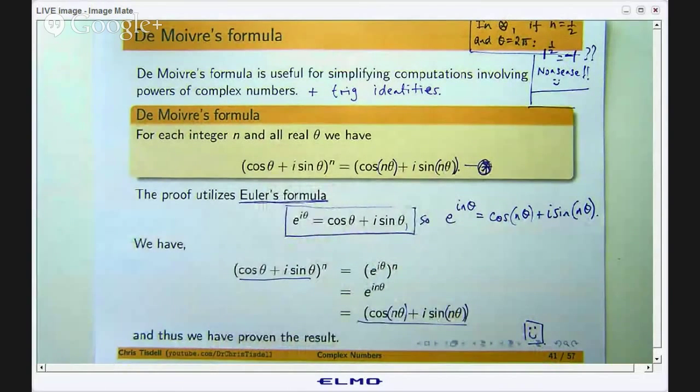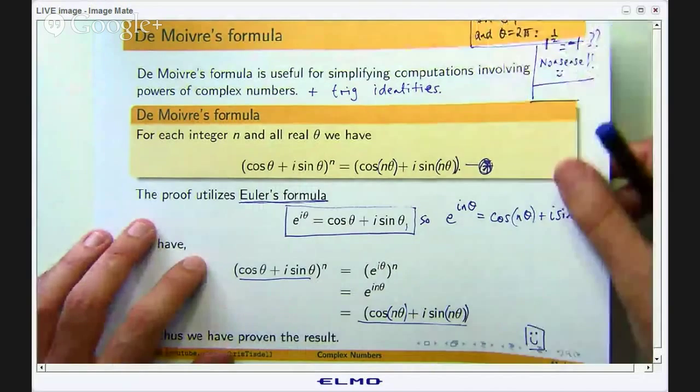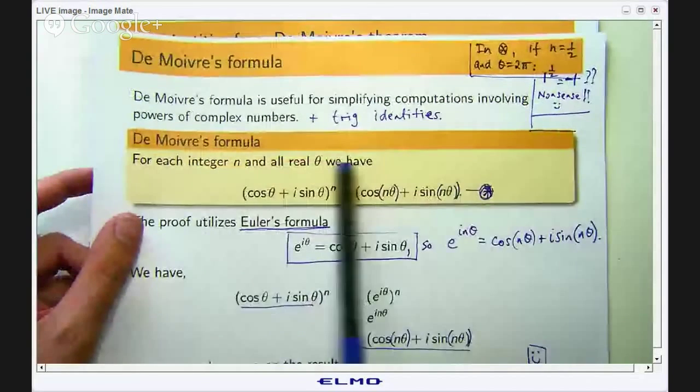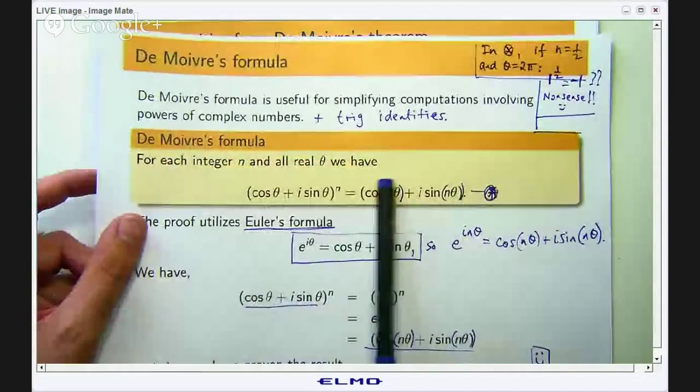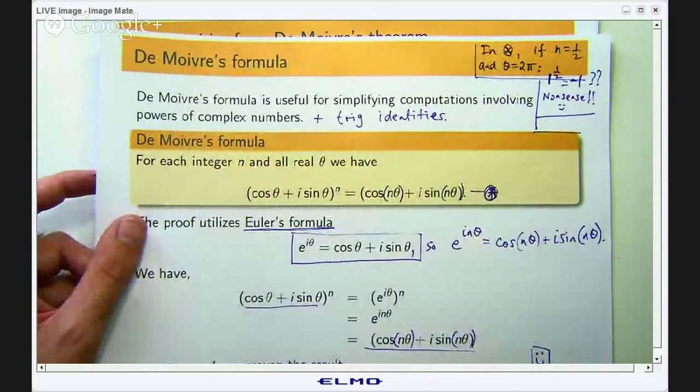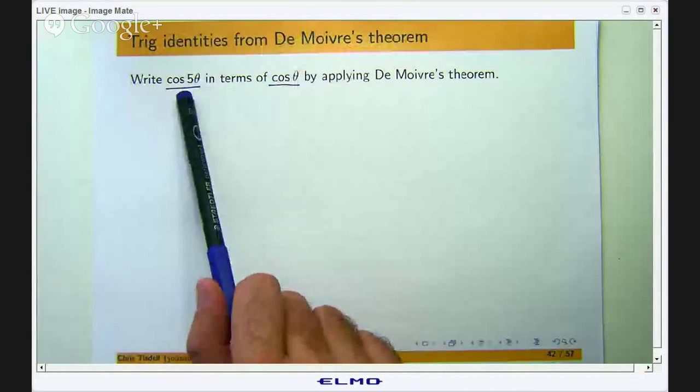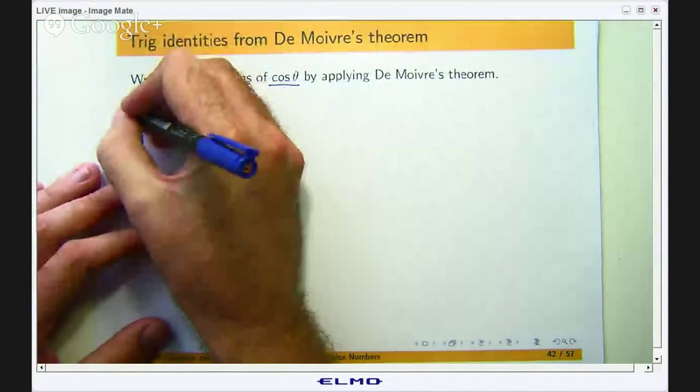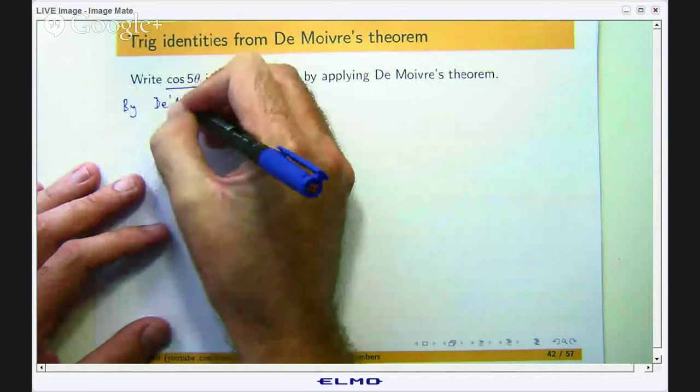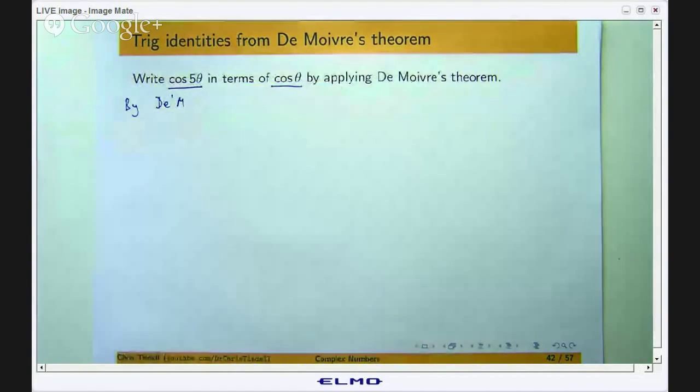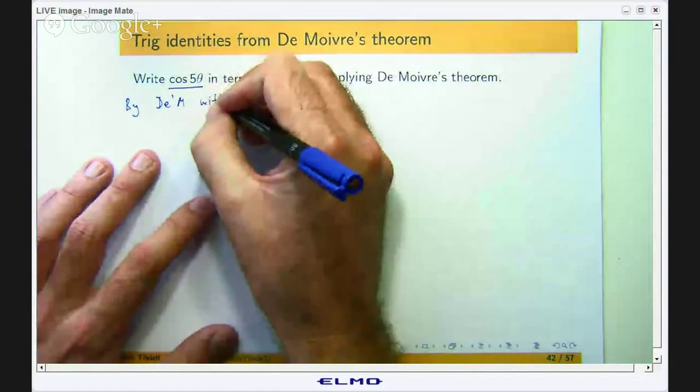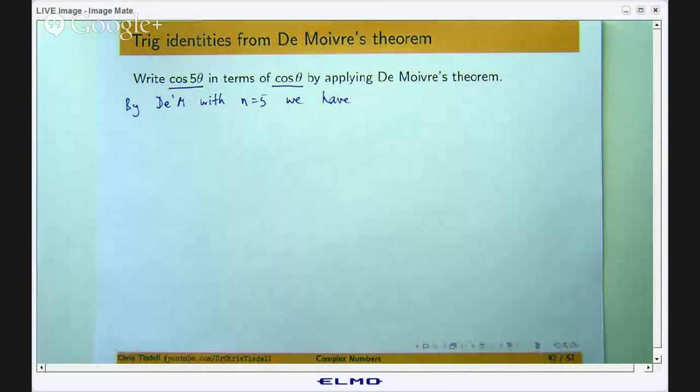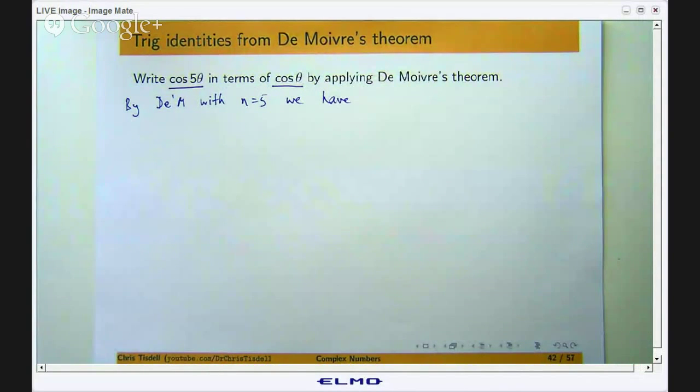So how do we do it for this particular example? Well, we are going to start with n equals 5 in this relationship. We will get a cos 5θ there, a sin 5θ there and a power 5 up there. If you wanted to write cos 6θ or something you would start with n equals 6. I am just going to shorten de Moivre to dm.